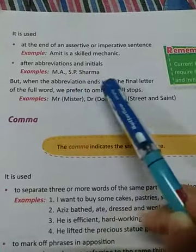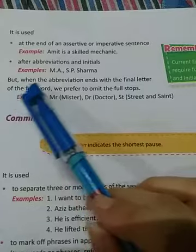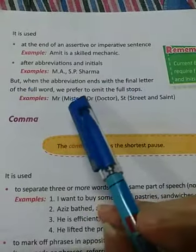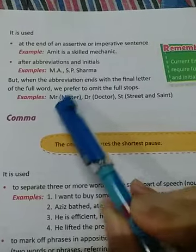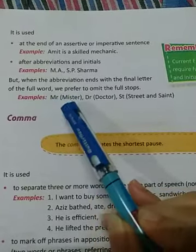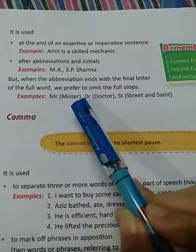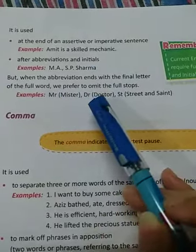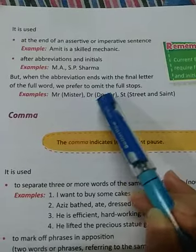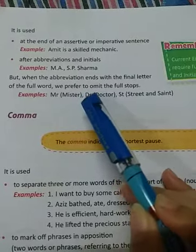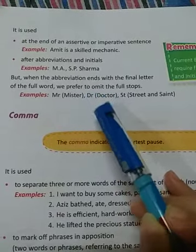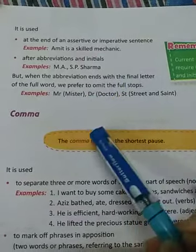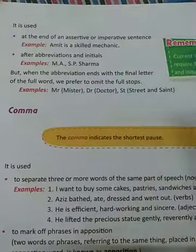But when the abbreviation ends with the final letter of the full word, we prefer to omit the full stops. For example, 'Mister' — the short form is MR, the starting letter and the final letter, so in this case we do not use a full stop. Similarly for 'Doctor', the short form is DR — starting letter D and final letter R — so we omit the full stop in such cases.